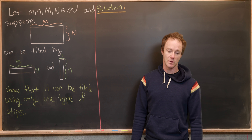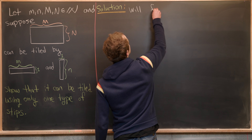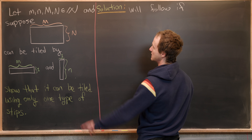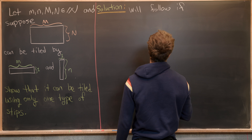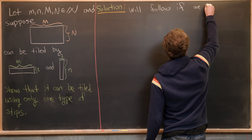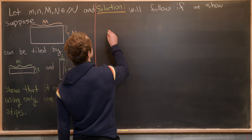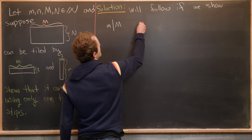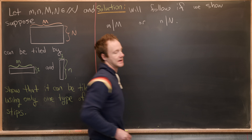What we first want to notice is that this will follow if we give some sort of divisibility relationship between the capital numbers and the lowercase numbers. In other words, if we show one of these two properties: m divides capital M, or n divides capital N.